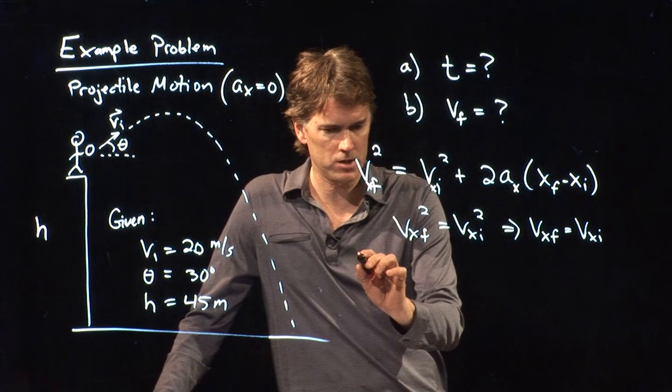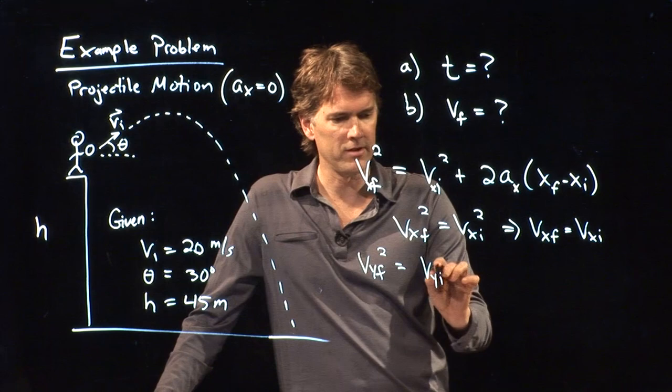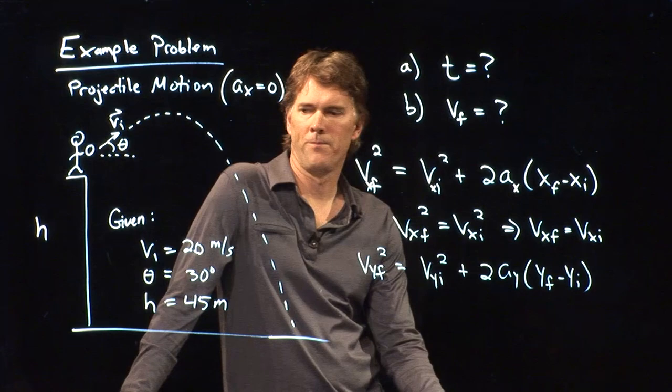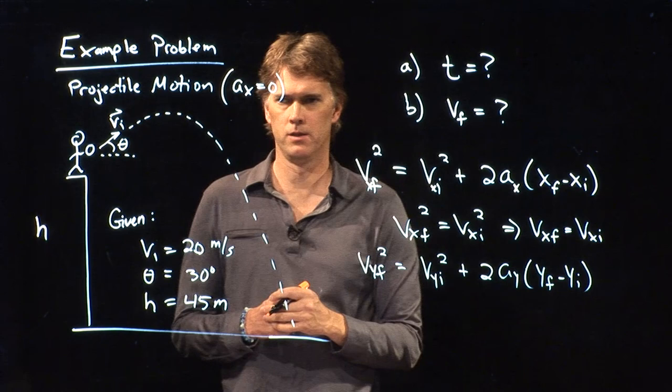But let's rewrite this equation for y. Vy final squared equals vy initial squared plus 2a sub y times yf minus yi. What is a y for this projectile after it launches?